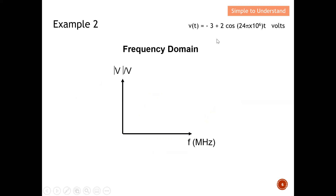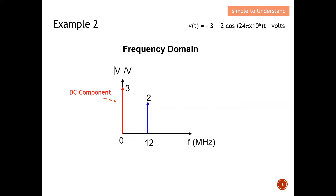For the frequency domain of Example 2, there are two terms. The DC component of −3 appears at frequency zero with a magnitude of 3 (we use magnitude, so it is drawn as positive 3). The AC component has Vp = 2 at a frequency of 12 MHz. That completes the full solution for Example 2 — transforming the equation into both time domain and frequency domain.